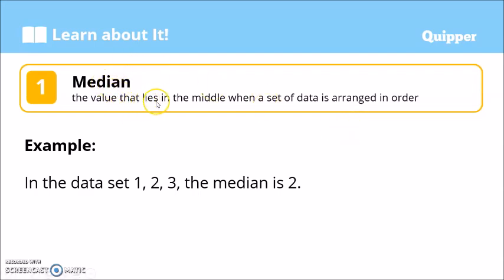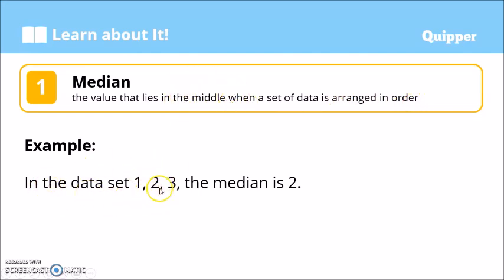Median is the value that lies in the middle when a set of data is arranged in order. The data is arranged in order and the median is the middle value. For example, in the data set 1, 2, 3, the median is 2 because 2 is in the middle position.